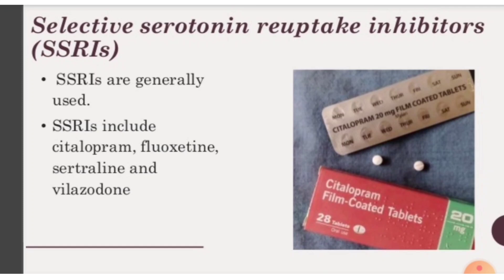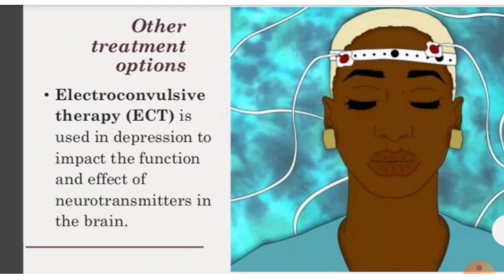Another treatment is psychotherapy combined with medication. The most common medications are SSRIs — selective serotonin reuptake inhibitors — which help increase serotonin in the brain, since serotonin production is often abnormal in depression. SSRIs include citalopram, fluoxetine, sertraline, escitalopram, and vilazodone. Other treatment options include ECT or electroconvulsive therapy, which impacts the function and effect of neurotransmitters in the brain, and transcranial magnetic stimulation.